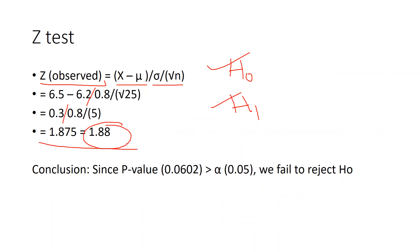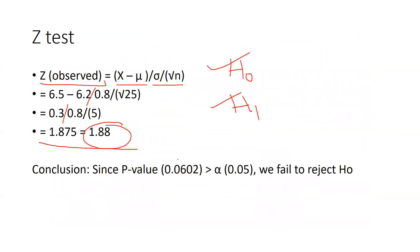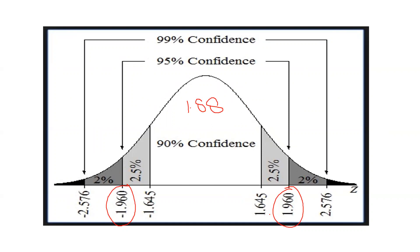Our calculated Z value is 1.88, and we are at the 95% confidence interval. Looking at the chart, the range is minus 1.960 to plus 1.960. Since our value of 1.88 falls below 1.960, it is within the acceptance region. Therefore, we fail to reject the null hypothesis.